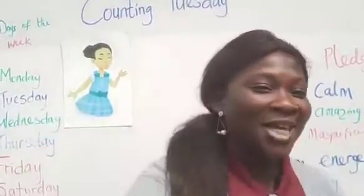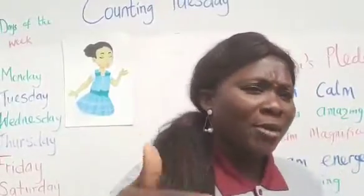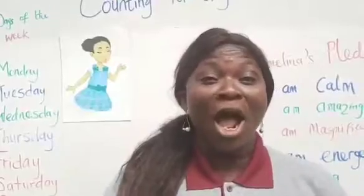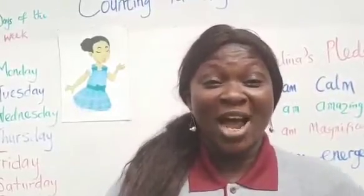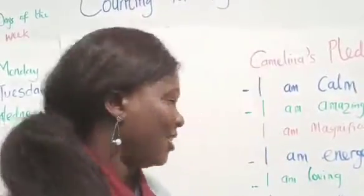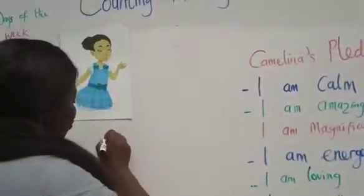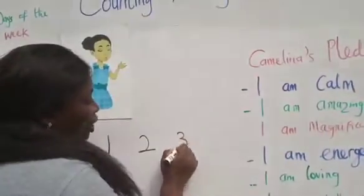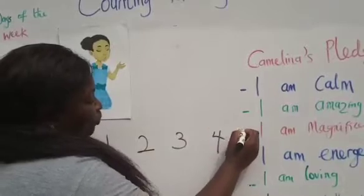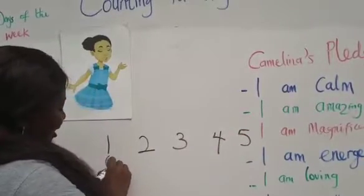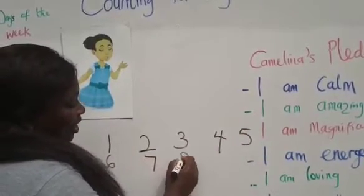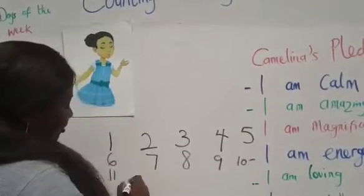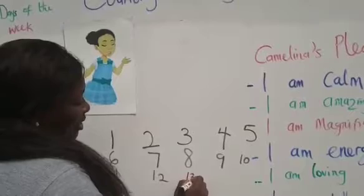So children, today we'll be counting and I'll be writing it on the board because we're going to use it for our three times table. Are you ready? Come on, let's count together. So we have: one, two, three, four, five, six, seven, eight, nine, ten, eleven, twelve, thirteen.